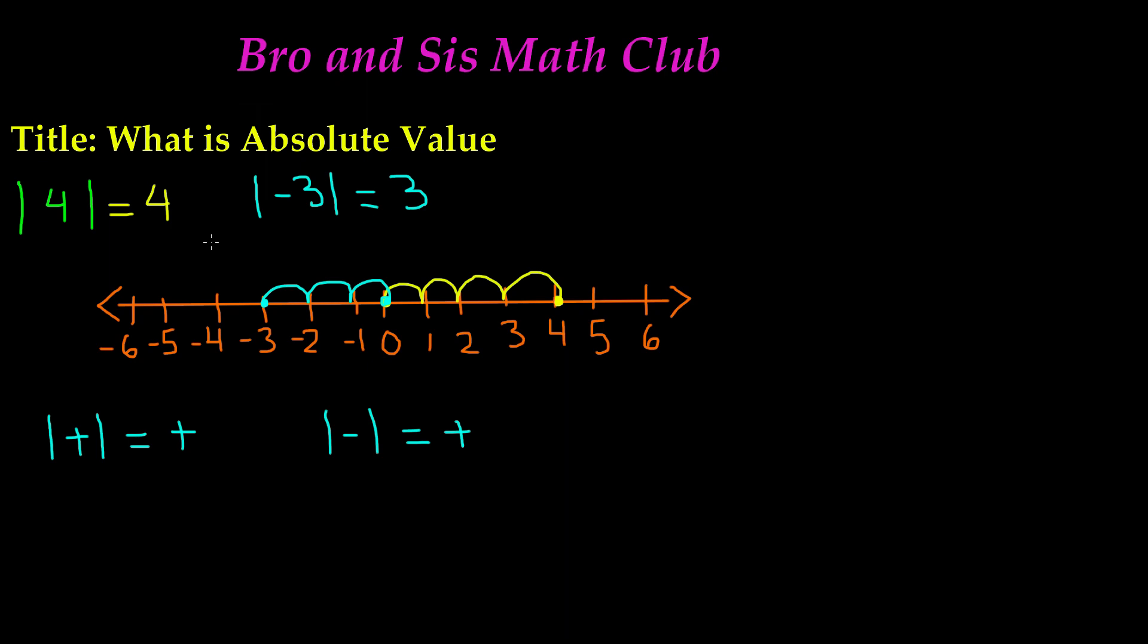These are just simple numbers. Once again, if I had positive 1,500, then the absolute value would be positive 1,500. And if it was negative 1,500, the absolute value would still be positive 1,500, because this is the distance we're measuring. It's always going to be positive.